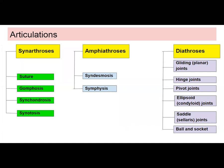Under synarthroses, you have sutures, gomphosis, synchondrosis, and synostosis. Under diarthroses, you have joints you're probably somewhat familiar with: gliding or planar joints, hinge joints, pivot joints, ellipsoid or condyloid joints, saddle joints, and ball-and-socket joints.